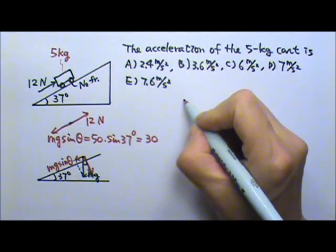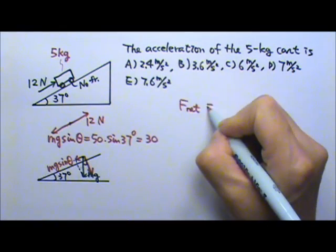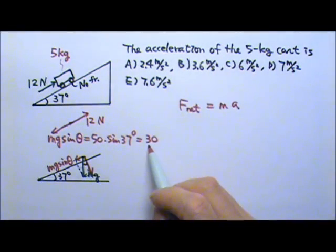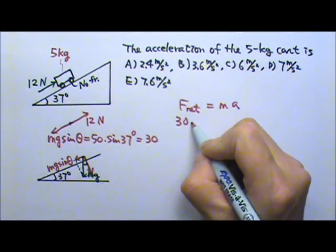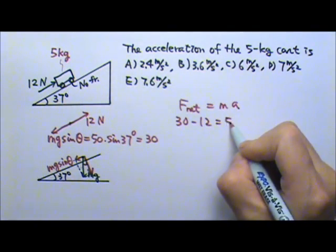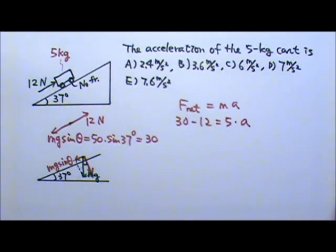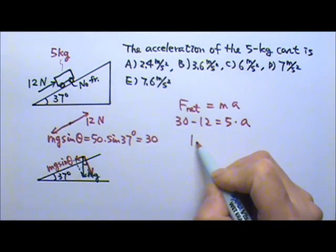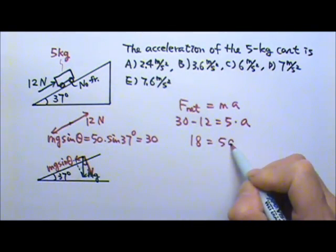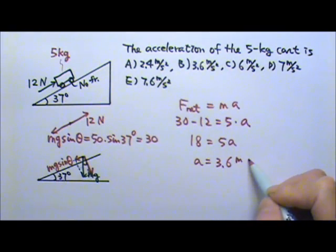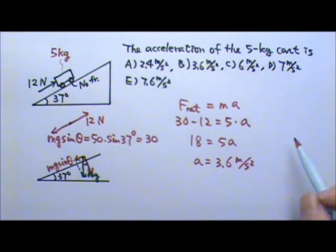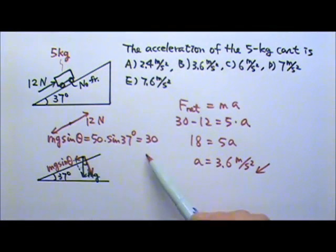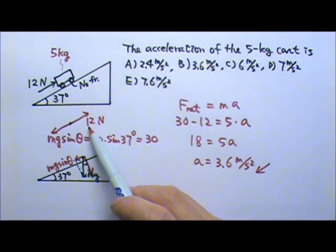So now we can write our force equation: the net force equals ma. 30 is more than 12, so I can do 30 minus 12 equals 5 times a. So this gives me 18 equals 5a, so acceleration is 3.6 meters per second squared. If you want a direction, that will be down the incline, because down the incline, mg sin θ is more than the force that's pushing it up the incline.